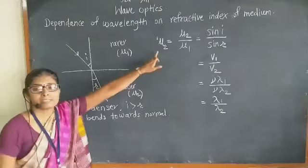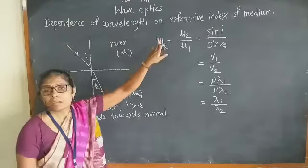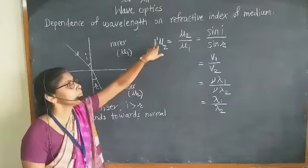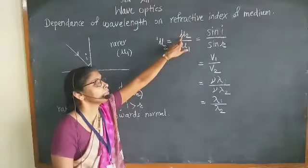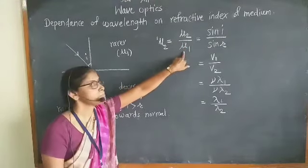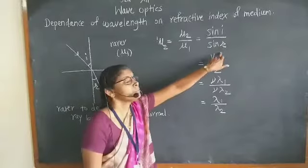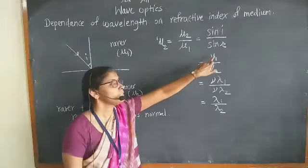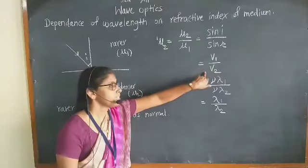Here is Snell's law of refraction. You also studied about this refractive index of second medium with respect to first medium is the ratio of absolute refractive index of second medium to the absolute refractive index of first medium, that is sin i upon sin r. Also it is equal to velocity in first medium divided by velocity in second medium.